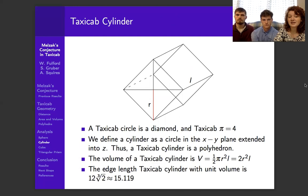Here is a taxicab cylinder. Again, a cylinder, a sphere, those are not polyhedra in Euclidean geometry, but they are in taxicab geometry. A cylinder, we're going to consider a circle in the XY plane, which William told us is a diamond.